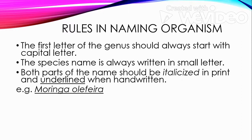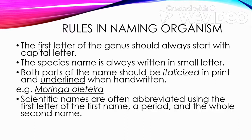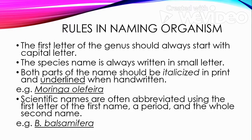For example, Moringa oleifera is the scientific name of malunggay. Another rule: scientific names are often abbreviated using the first letter of the genus name, followed by a period, and the whole second name. For example, B. balsamifera — the full scientific name of sambong is Blumea balsamifera.